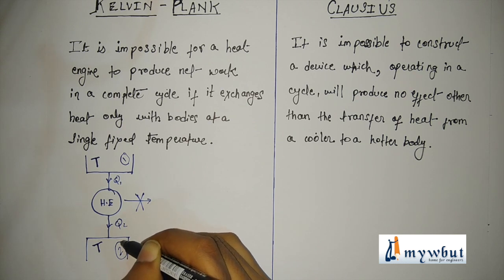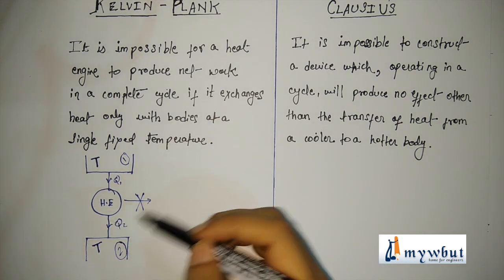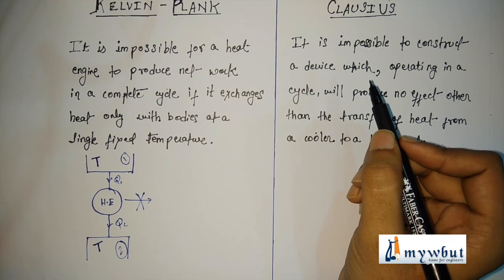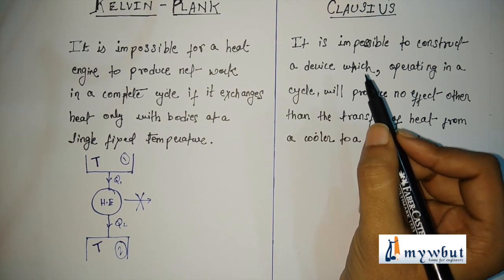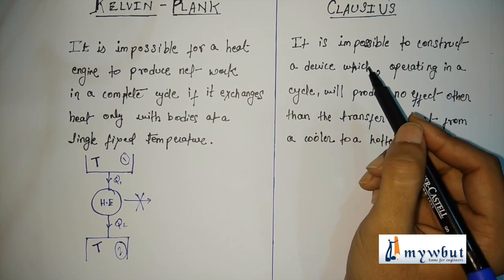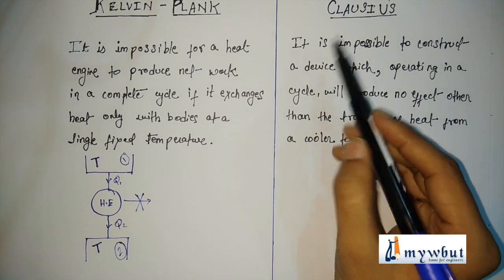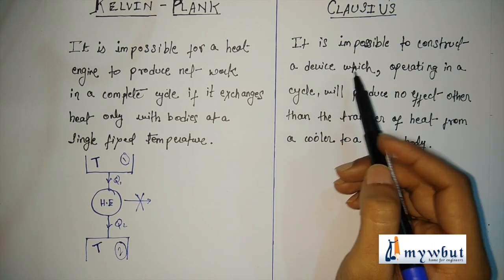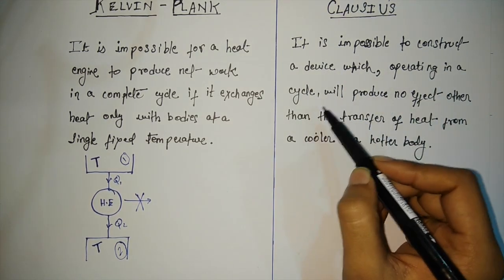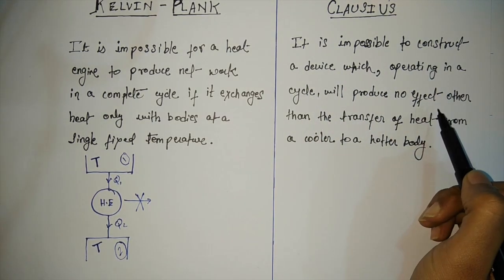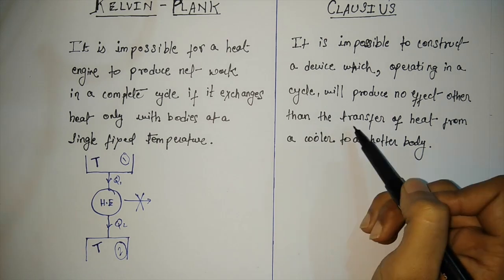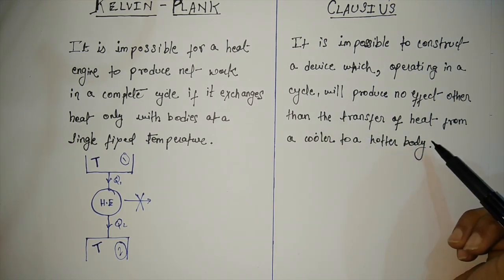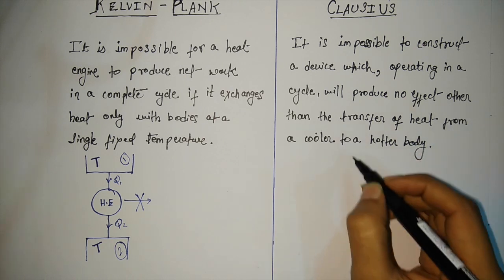That is, no heat transfer will take place from body 1 to body 2. This is what the Kelvin-Planck statement conveys. Now let us go to the Clausius statement of the second law of thermodynamics. It states that it is impossible to construct a device which, operating in a cycle, will produce no effect other than the transfer of heat from a cooler to a hotter body.